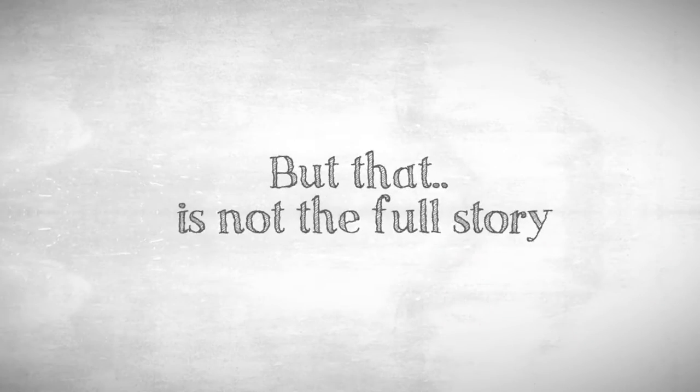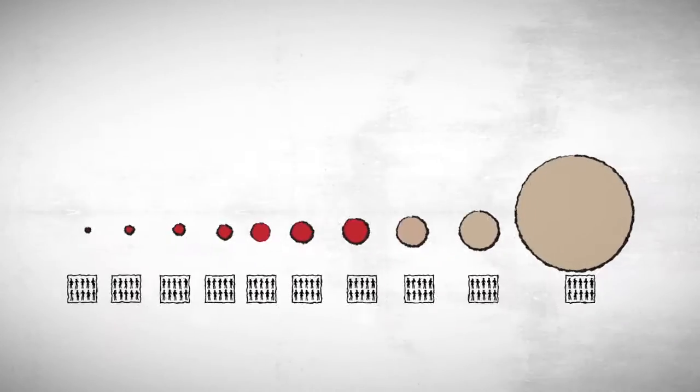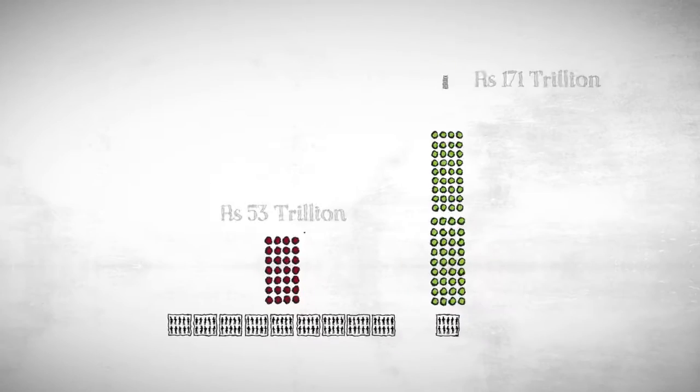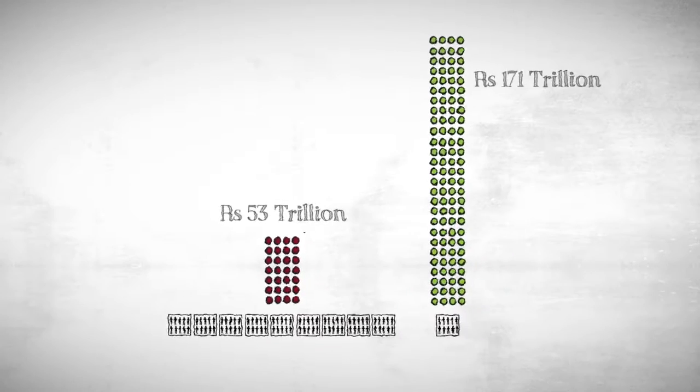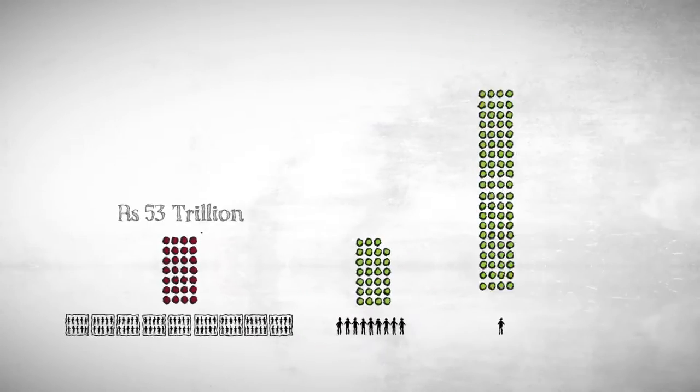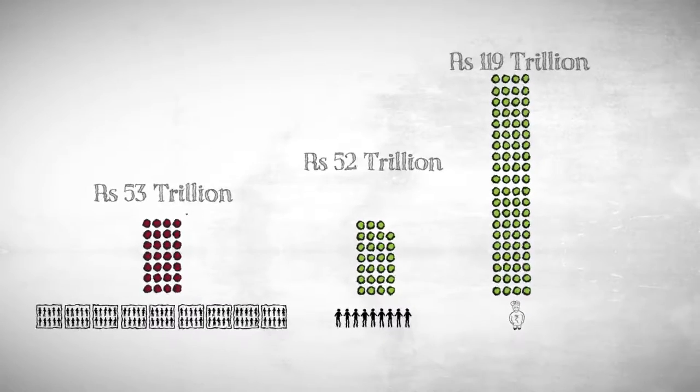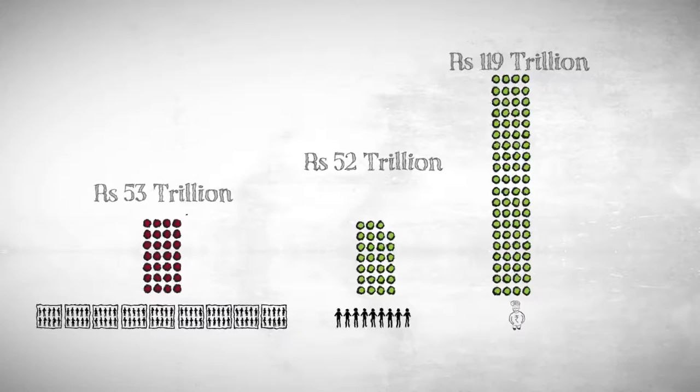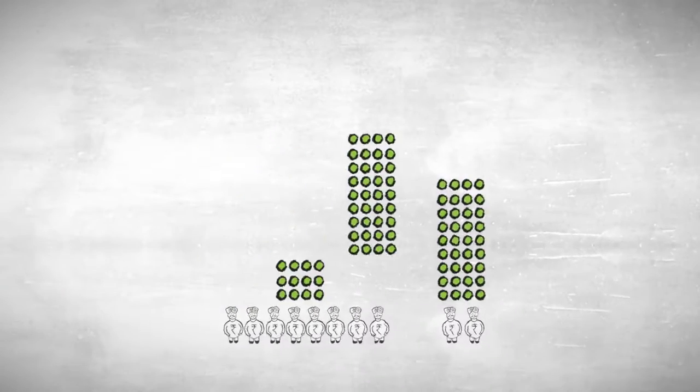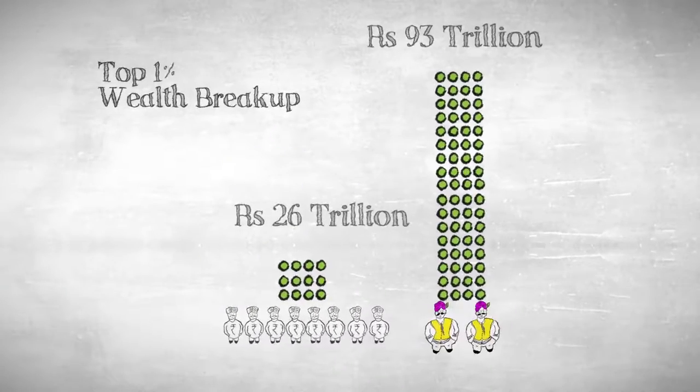But hang on. That's not the full story. It's not just that the top 10% have 3 fourths of all the wealth. The top 1% have half of all the wealth. In fact, there is a consistent pattern of elite within elite. Within the top 1%, the top 0.2% have the most of it.